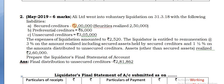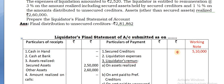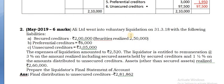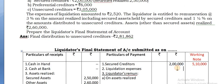The secured creditor's claim amount payable is 2,00,000. What is the amount of security realized? 2,50,000. Since the claim is 2,00,000 and the realized amount is 2,50,000, you can take the full 2,00,000 here. If it were only 1,50,000 realized, you would take only 1,50,000 and not 2,00,000.